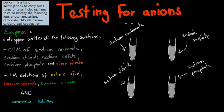This experiment will be done in two stages. First, we're going to have the experiment which tests for anions, and then we're going to have the experiment which tests for cations. The actual point is to perform a first-time investigation to carry out a range of tests — including the flame test — to identify the following ions: phosphate, sulfate, carbonate, chloride, barium, calcium, lead, copper, and iron. Remember, these were the ones covered in the last two videos — anions and cations.